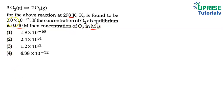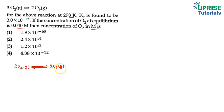The equation given is: 3O₂ in gaseous form is converting to 2O₃, also in gaseous form. So oxygen gas is converting to ozone gas. It is a reversible reaction, meaning oxygen can convert to ozone and ozone can also convert back to oxygen.